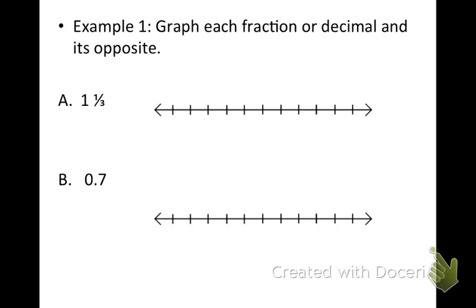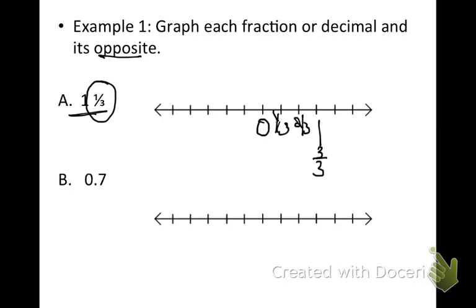I'm going to graph 1 and 1 third. I'll place 0 in the middle because I also need to graph the opposite. I need to break my number line into thirds: 1 third, 2 thirds, and then 1 whole — which is the same as 3 thirds. I can continue: 1 and 1 third, 1 and 2 thirds, and then 2.